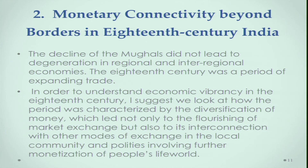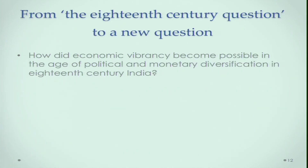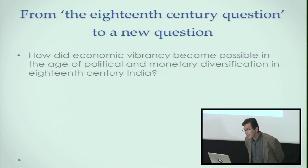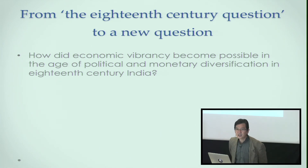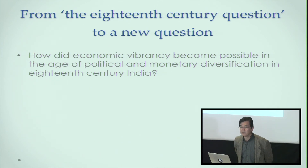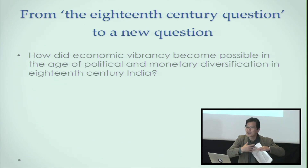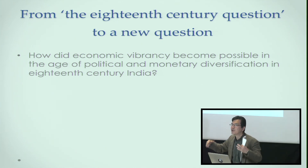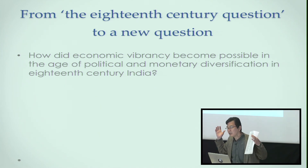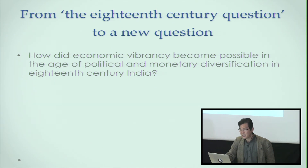If you emphasize too much on the Mughal system, you will picture the 18th century as a dark period in which the Mughal system collapsed. But this was not the case. There have been revisions of the 18th century in India, and now we know the 18th century featured a very vibrant economy and development of early modern state apparatus. The decline of the Mughals did not lead to degeneration in regional and inter-regional economies. The 18th century was a period of expanding trade, not a dark age as imperialist or nationalist historians used to describe.